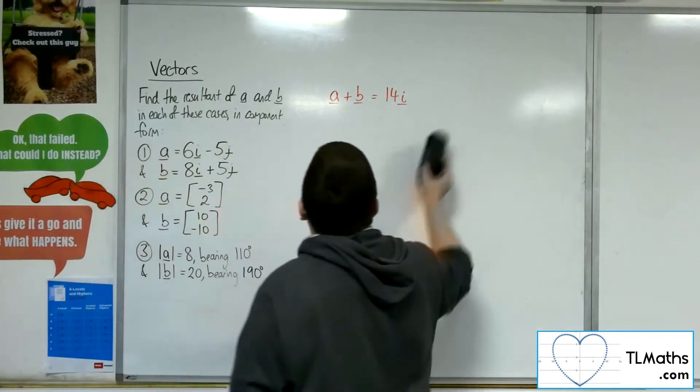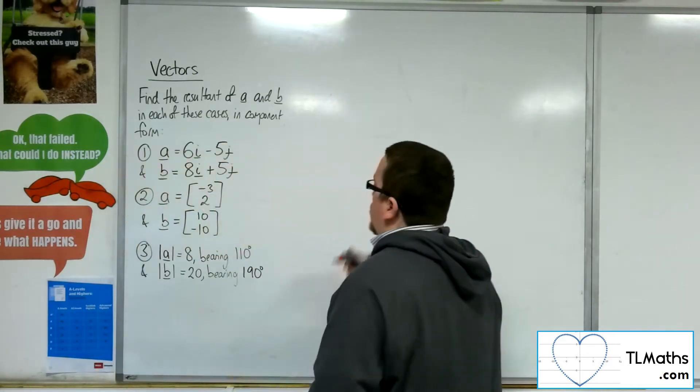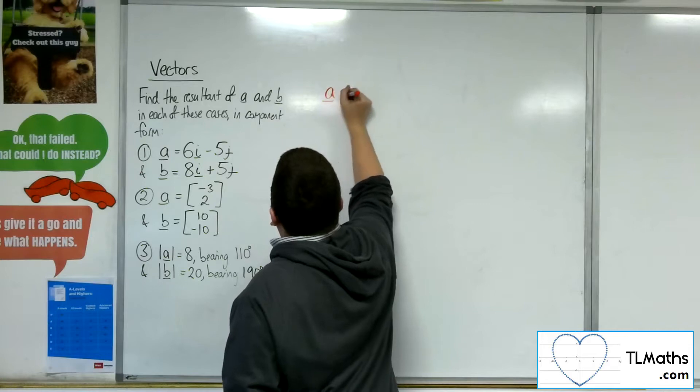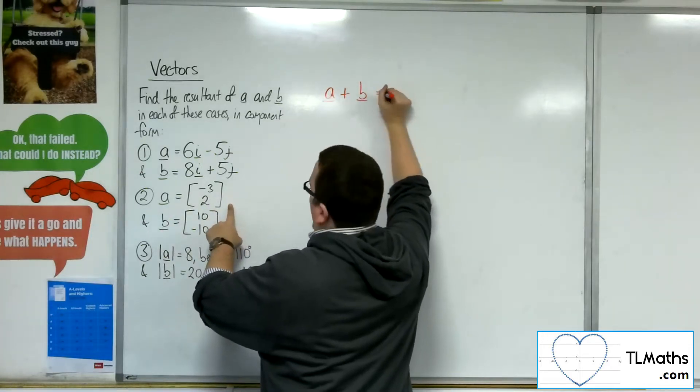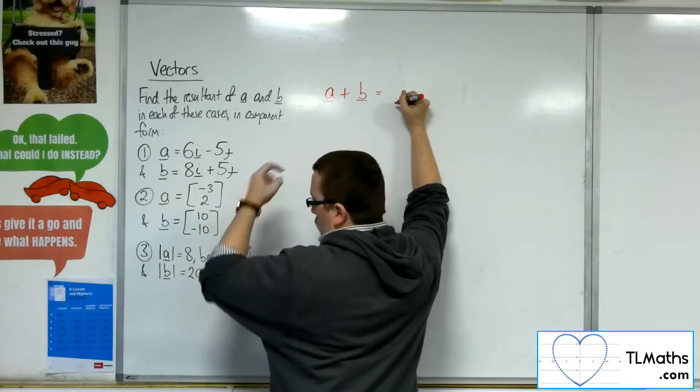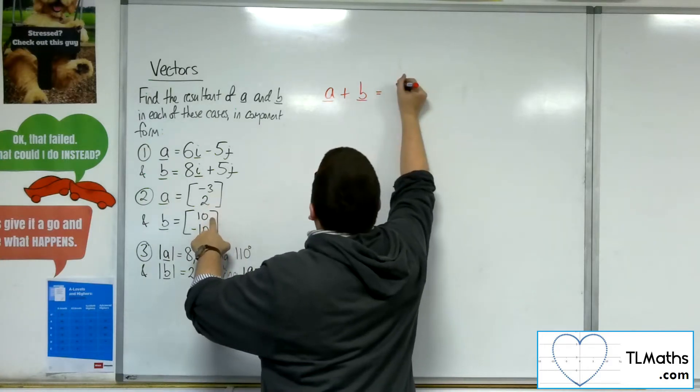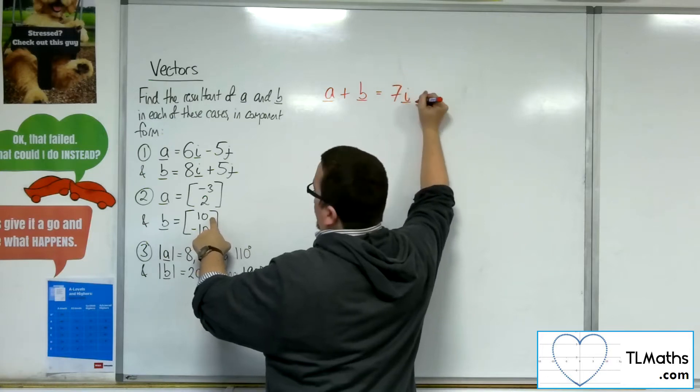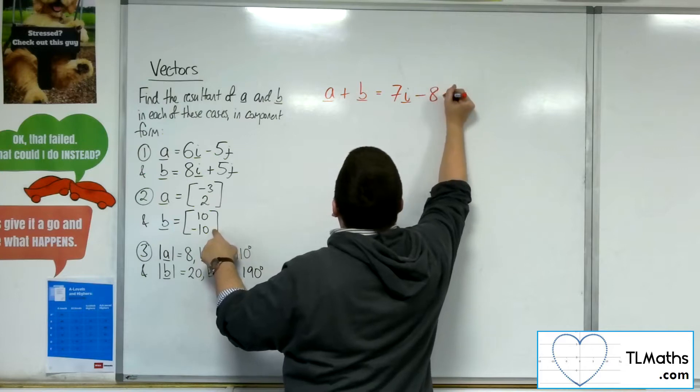So that's the first one. Number two, we've got a is minus 3, 2, so a column vector, and b is 10 minus 10 column vector. So a plus b is minus 3 plus 10, so 7i, and 2 plus minus 10 is minus 8, so minus 8j.